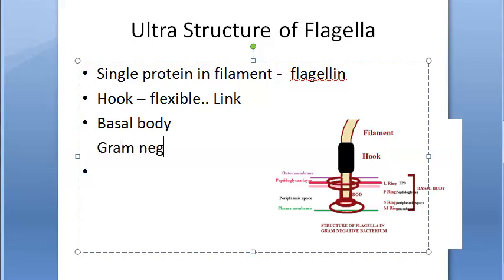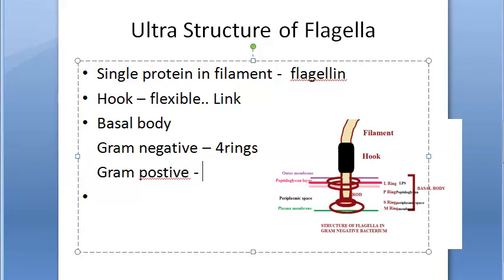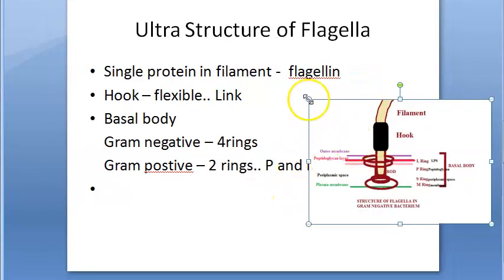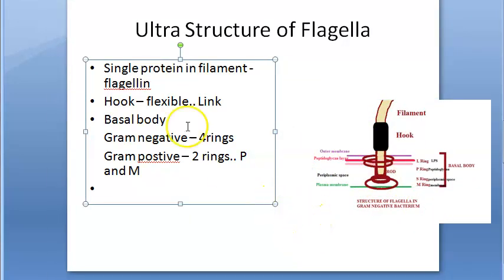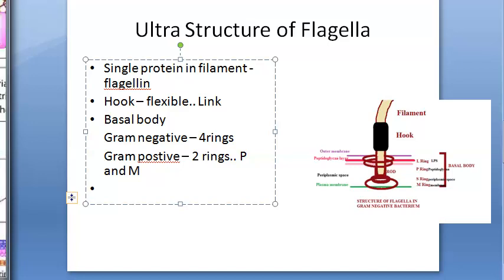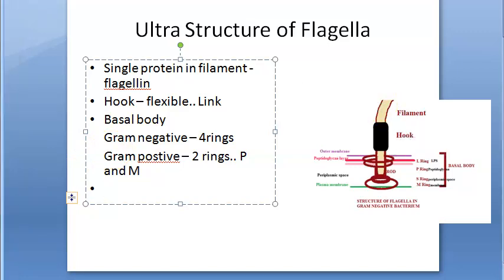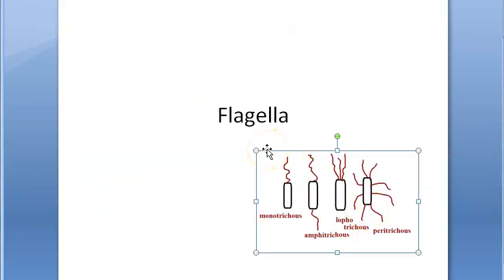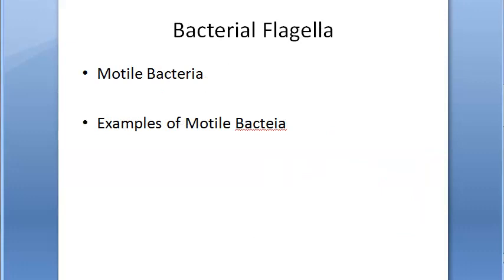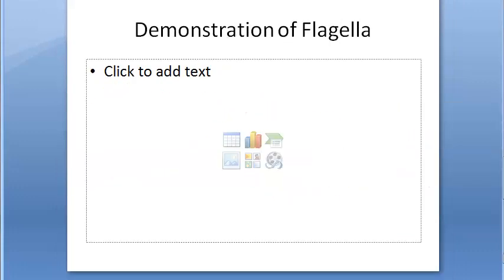In gram-negative bacteria there are four rings; in gram-positive bacteria only two rings - peptidoglycan and membrane. That was the ultrastructure of the flagellum. If they ask about flagellar structure, draw the ultrastructure diagram, and if they ask about flagellar arrangement, draw the diagram explaining monotrichous, amphitrichous, lophotrichous, and peritrichous.